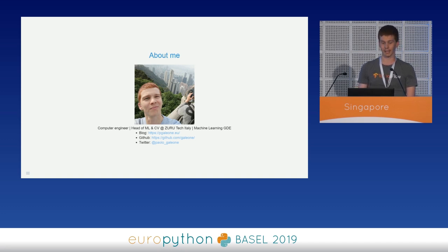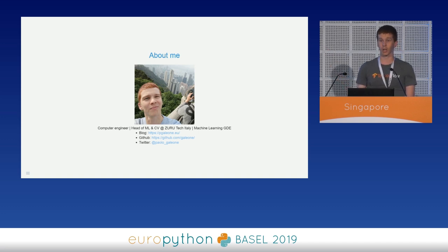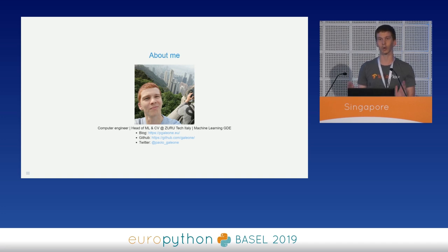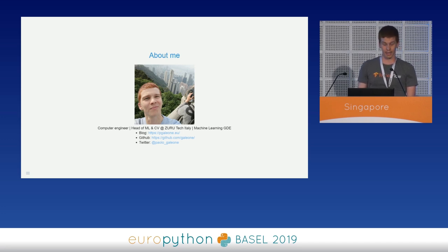I blog about TensorFlow — you can see the address of my blog there. I answer questions on Stack Overflow about TensorFlow almost daily. I write open source software using TensorFlow, and I use TensorFlow every day at work. For this reason, Google noticed this strong passion and awarded me with the title of Google Developer Expert in Machine Learning. I have a blog, and I invite you to go read it, mainly because this talk is born from a three-part article I wrote about TF function and Autograph.